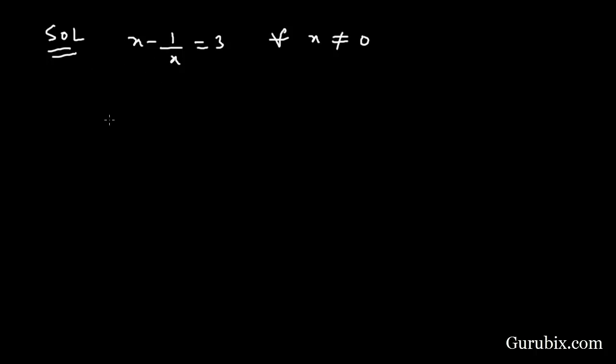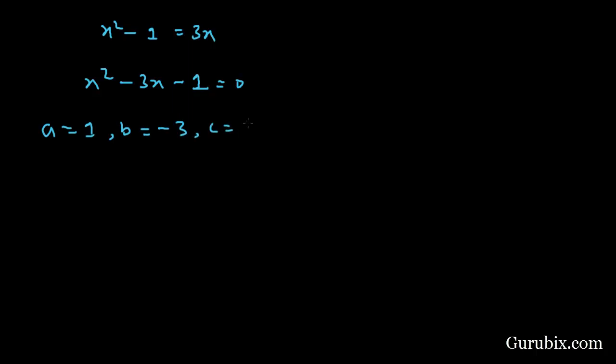We shall multiply both sides by x. Then we have x squared minus 1 equals 3x. This equals x squared minus 3x minus 1 equals 0. So here a is 1, b is minus 3, c is minus 1.